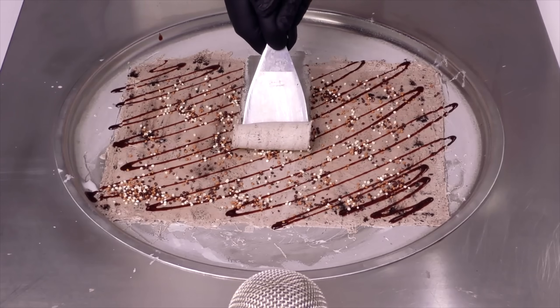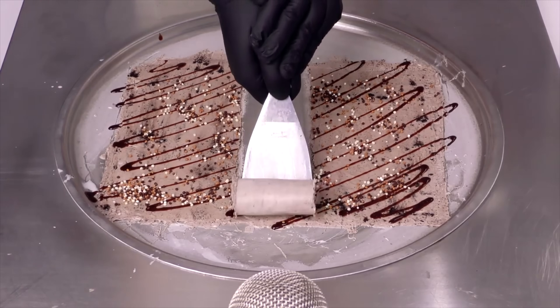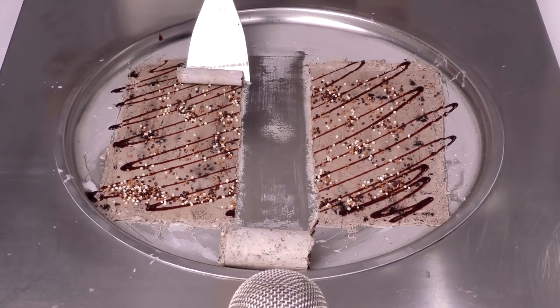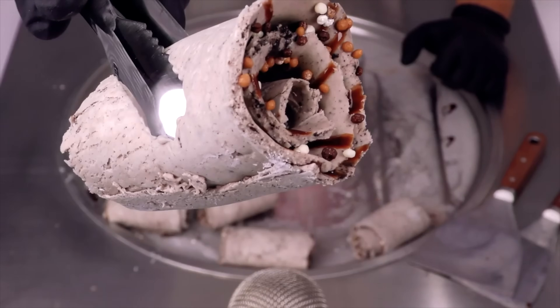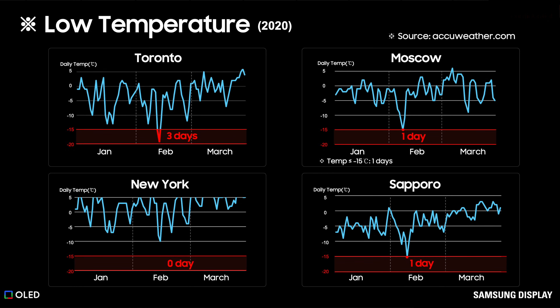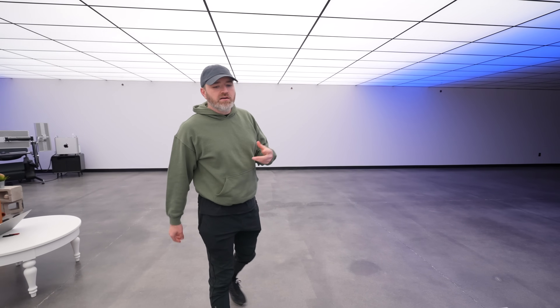They put Toronto on the graph and made sure to let you know there were three days in Toronto in 2020 that were below minus 20°C — which is actually colder than Moscow, in case you were wondering. If you're in Toronto, you know exactly what's up with that. You can fold, you can keep folding.